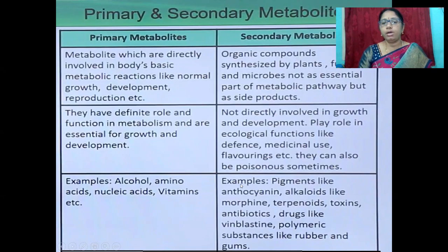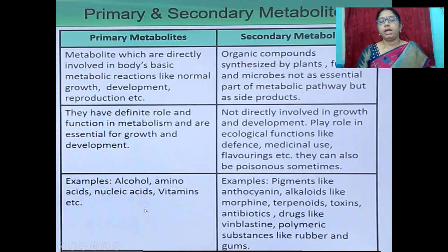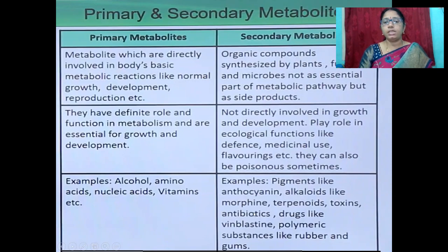Secondary metabolites can also be poisonous sometimes. Examples of primary metabolites include alcohol, amino acids, nucleic acids and vitamins. Examples of secondary metabolites include pigments like anthocyanin, alkaloids like morphine, toxins, antibiotics, drugs, and polymeric substances like rubber and gums.